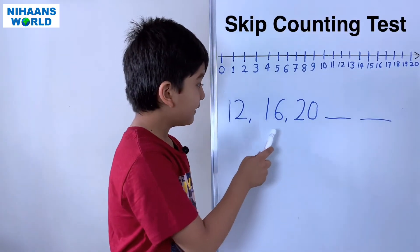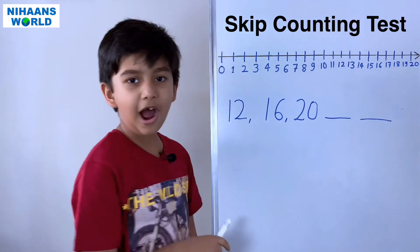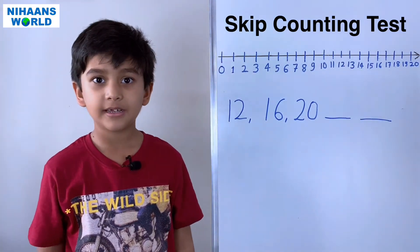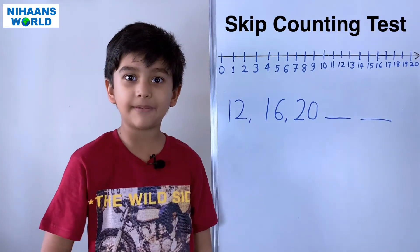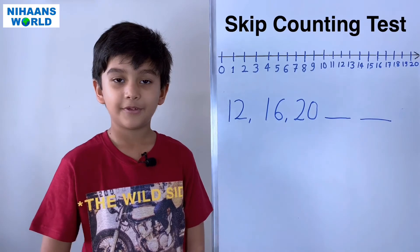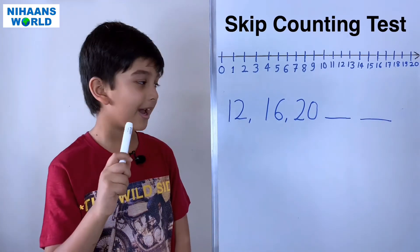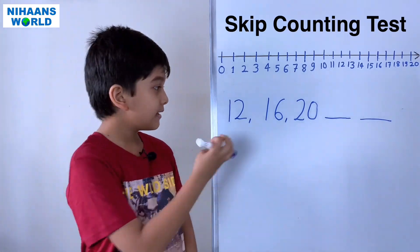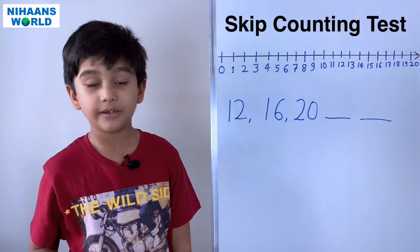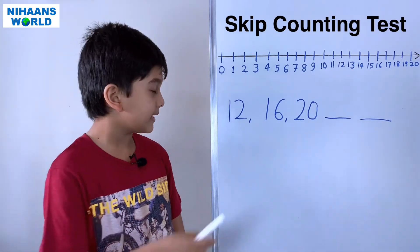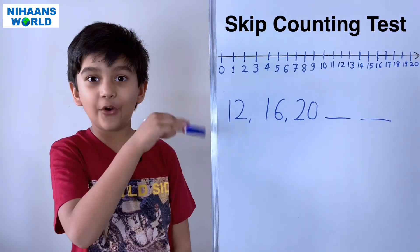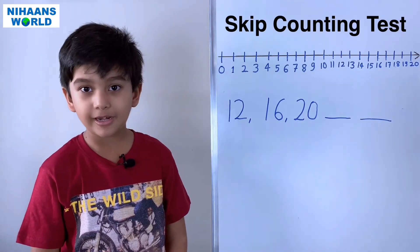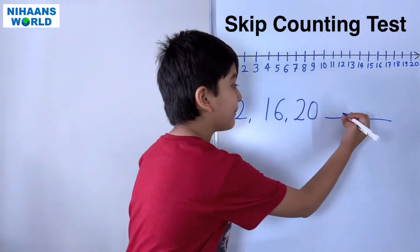Friends, I have one puzzle: twelve, sixteen, twenty — what number will come after? You have to find the difference between sixteen and twelve, which is four. So after twenty, twenty-four will come.